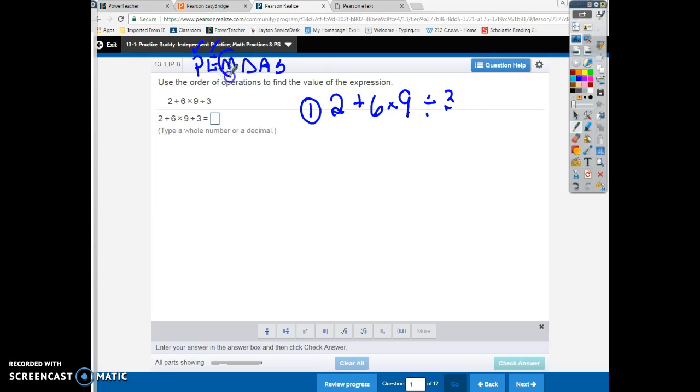Remember, multiplication and division occur together. And I see multiplication occurs first. So now I need to solve six times nine. And six times nine is 54. So I write that down, 54. And I bring everything else down. Two plus 54 divided by three.